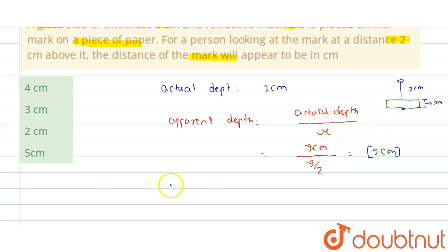Now students, the total distance of the mark from the human's eye is, that is, the distance of the mark will be the apparent depth, that is 2 cm, plus the height of the man above the glass slab.